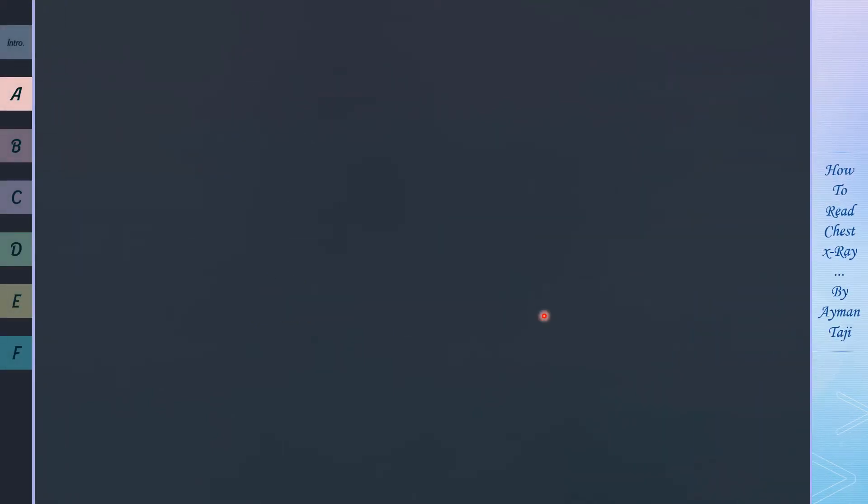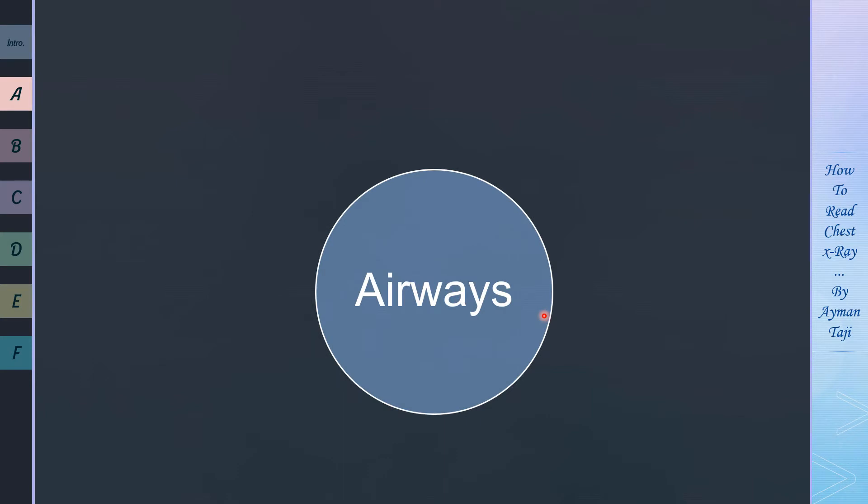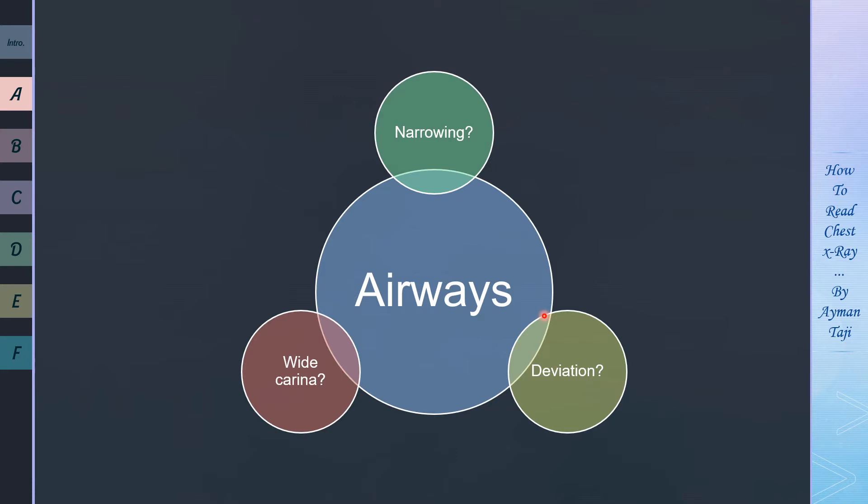When you check the airways you ask yourself three questions: is there any evidence of narrowing? Is the trachea straight and midline or is there any deviation? Is the carina wide, more than 100 degrees? By the way, carina is where the trachea bifurcates into left and right main bronchus.